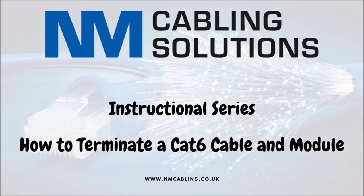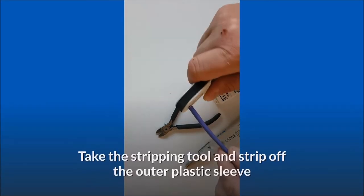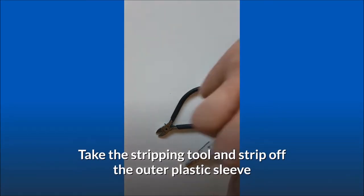This is a video to show you how to terminate a CAT-6 cable and module. Take the stripping tool and strip off the outer plastic sleeve.